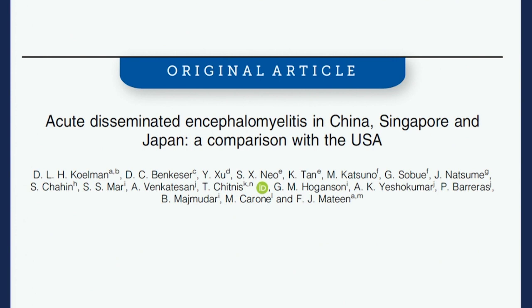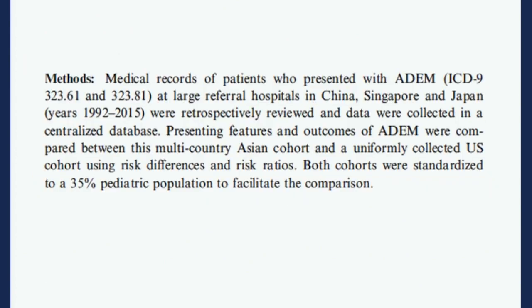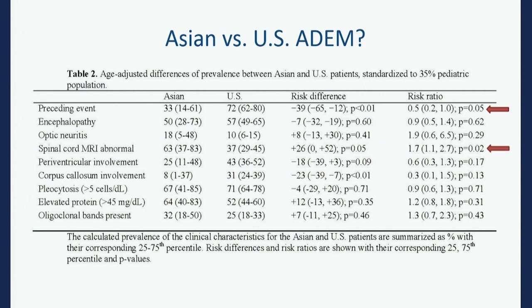We also compared Asia versus the US, since ADEM is a global problem. Asia is often thought to have a higher proportion of NMO versus MS. We did a parallel study in three large hospitals in Asia compared to the US, standardizing for 35% children in both cohorts. There were more people with spinal cord involvement identified in Asia, and more people in the US with identified preceding events.